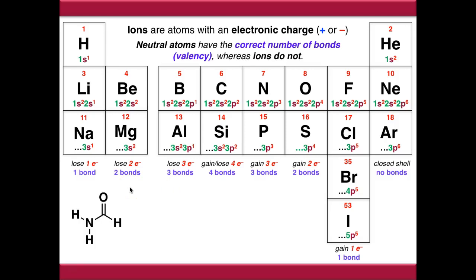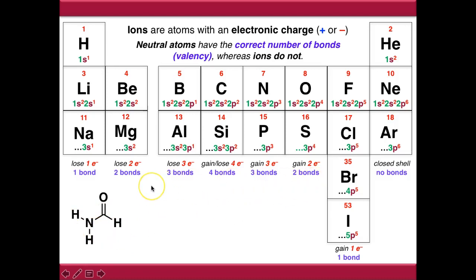If we look at a neutral molecule where all of the atoms are neutral, we can see that it's neutral because all of the atoms are making the correct number of bonds. So oxygen in this case is making two bonds, carbon is making four, all of the hydrogens are making one bond each, and nitrogen is making three. Everybody's perfectly happy, everybody's got a closed shell configuration.